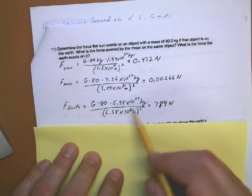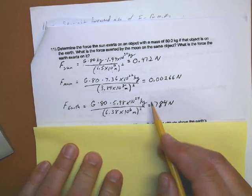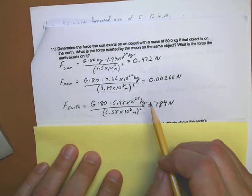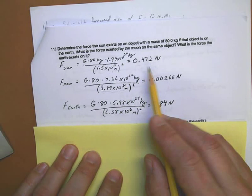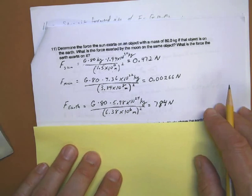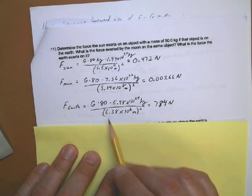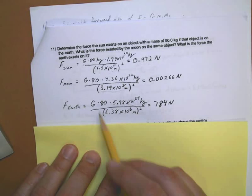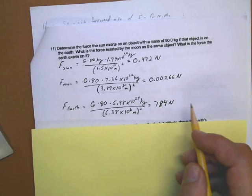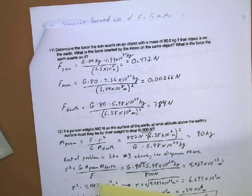And the force exerted on it by the moon, same thing, you use the earth to the moon distance, the mass of the moon, and you get an even smaller number. So, even though it's closer to the object, the moon is closer than the sun is, the sun is so much more massive, you get a number, oh, 100 or so times as much from the sun, that's 100 times more than the force from the moon. And then the force on the earth is just working it straightforward, like you did on problem number one, and you get 784 newtons. So, and that's a bigger number because it's closer to the earth, and the earth is more massive than the moon.